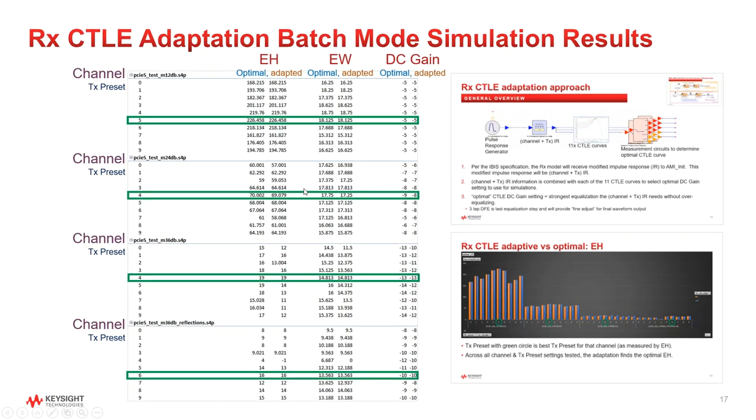The data is summarized on the table to the left. The channel and the transmitter preset settings are the rows with the eye height, eye width, and DC gain measurements in the columns.